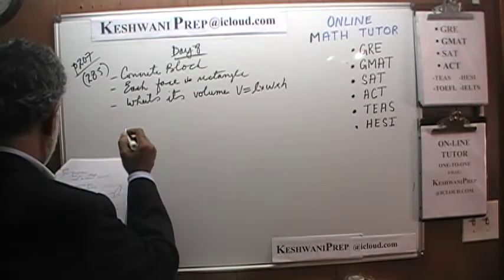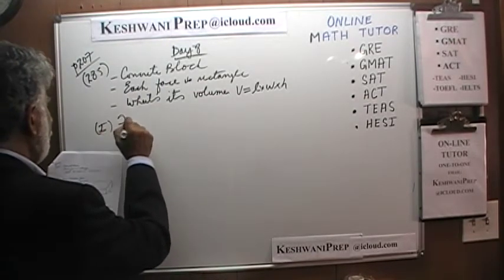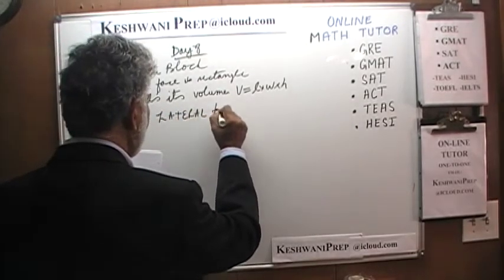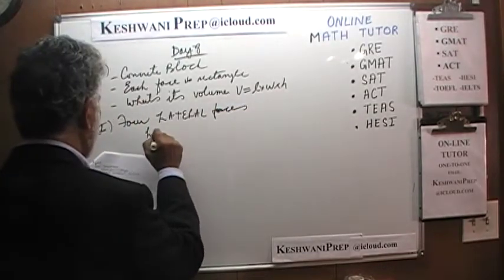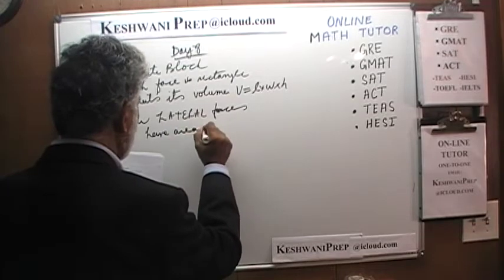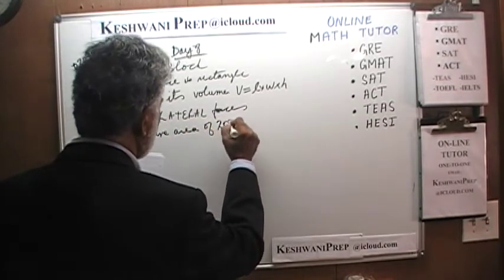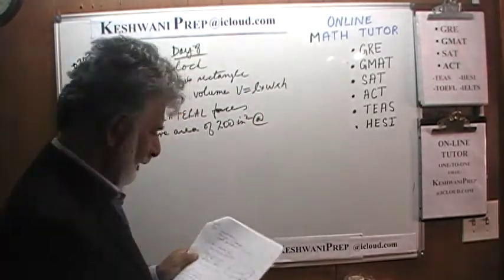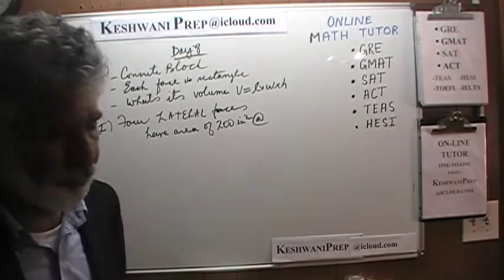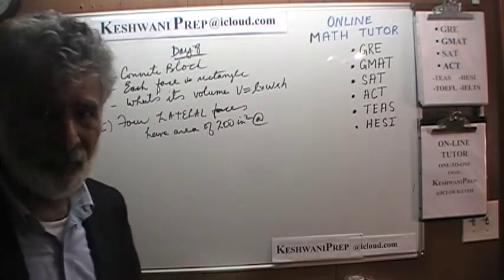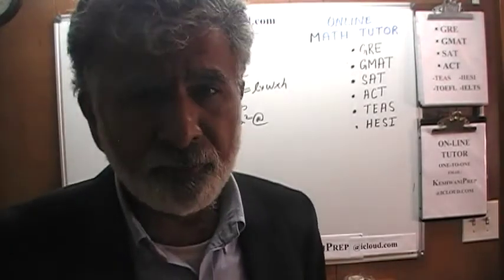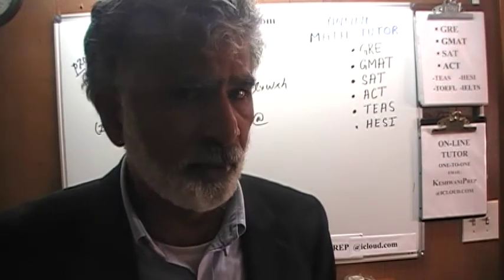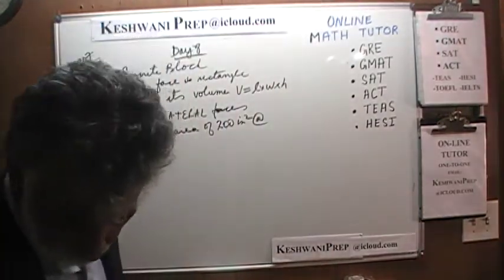The first statement tells us that the four lateral faces have an area of 200 square inches each. They use the term 'lateral faces' just to annoy us. If you don't know what lateral faces are, don't worry — it makes no difference to the solution. Four of the faces have a surface area of 200 square inches each.